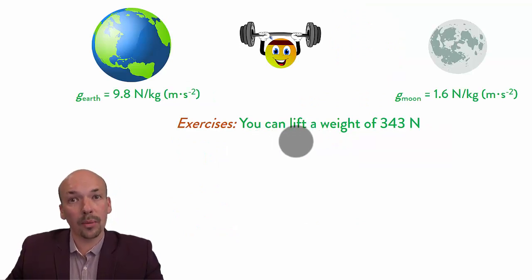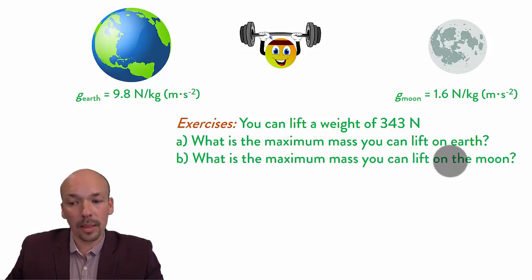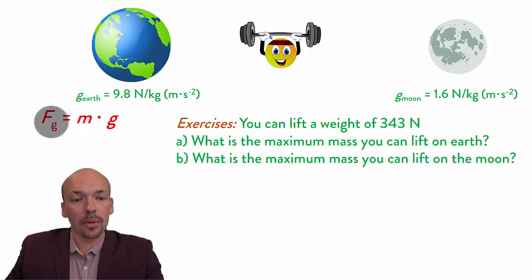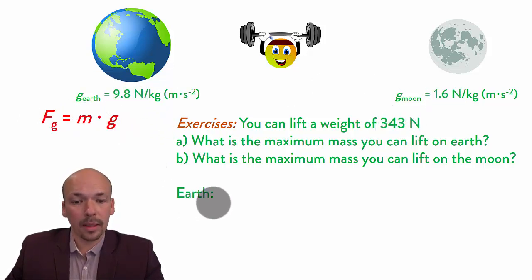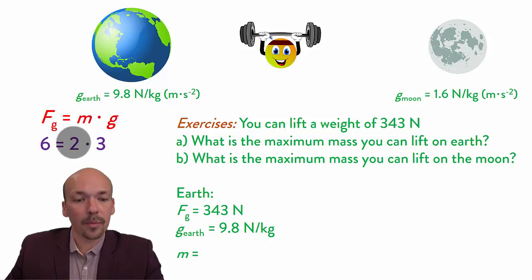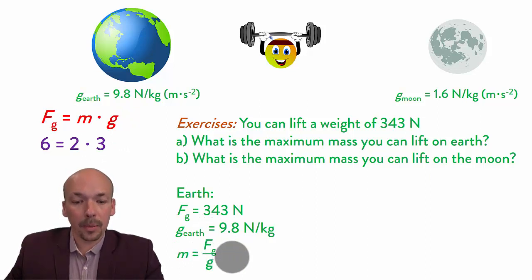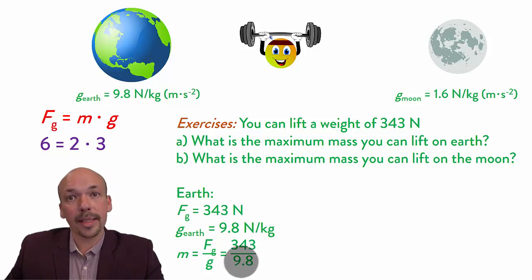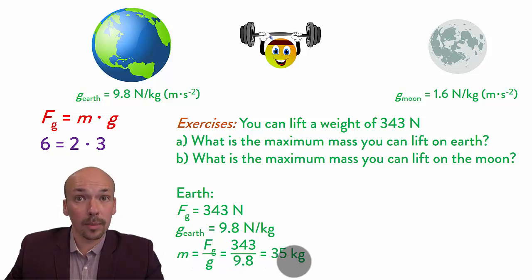You can lift a weight of 343 newtons. What is the maximum mass you can lift on Earth, and what is the maximum mass you can lift on the moon? First try this yourself. We use the equation Fg = m times g. We know the g values, and we know the force — so M is what we need to calculate. On Earth, Fg is 343 newtons and g is 9.8. We rearrange to M = Fg divided by g: 343 divided by 9.8, and the answer is 35 kilograms. Don't forget to put the unit after the number.